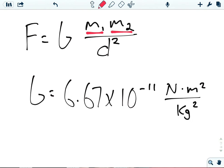And then we see we have this distance squared. Masses are in kilograms, distances in meters, and then our universal gravitational constant we have there.